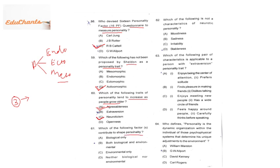Question 61: which factors contribute to shaping personality? The answer is both biological and environmental factors, because neither alone is sufficient. Biology and environment together play a great role in shaping personality.